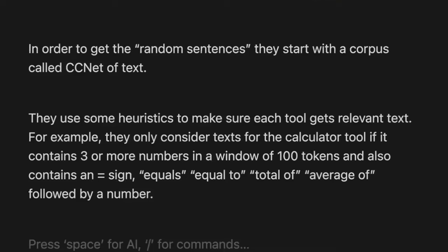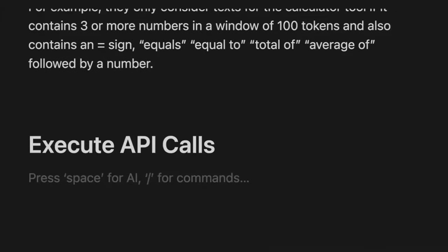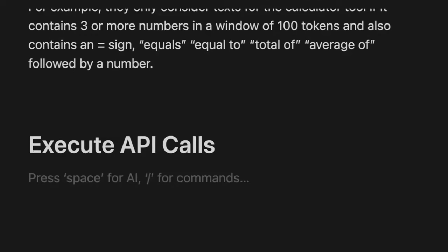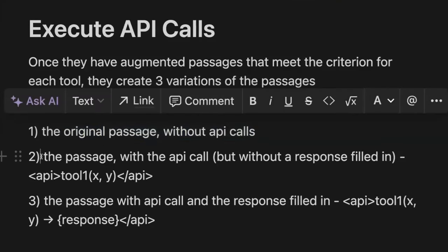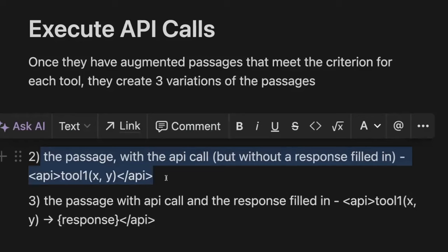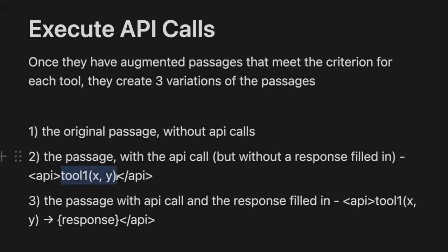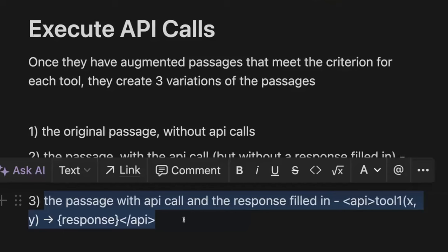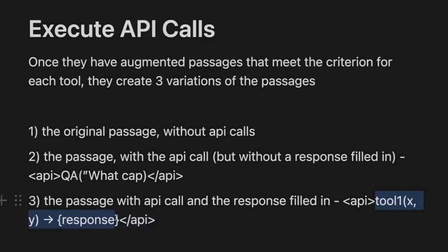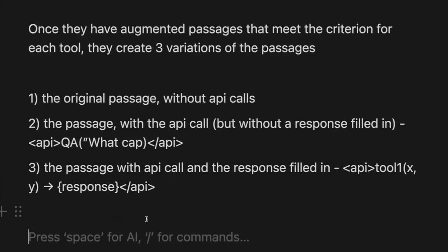After generating augmented sentences, they execute each API call and generate three variations: the original passage without API calls, the passage with the API call but without the response filled in — so just the tool name and parameters, like 'QA: what is the capital of whatever' — and the third is the API call with the response filled in. That third one is the one that fully runs the external tool.